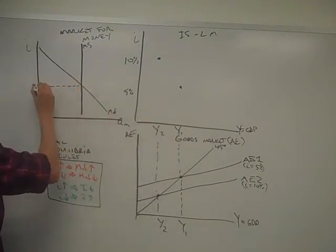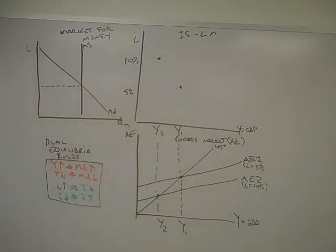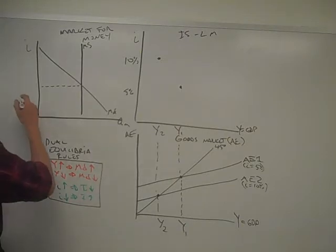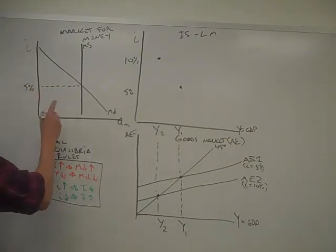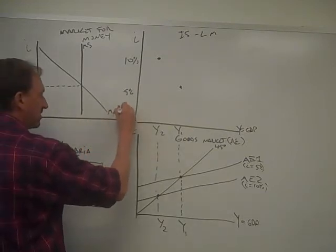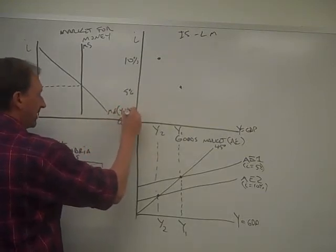And then a downward sloping money demand curve. And so now we have an interest rate that satisfies this. And so if Y1, let's call this 5% since it lines up with 5%.